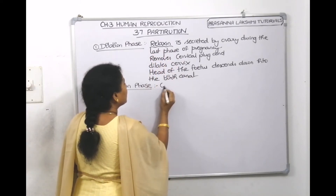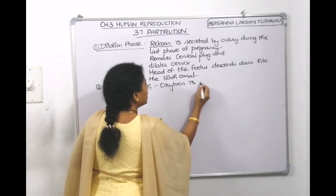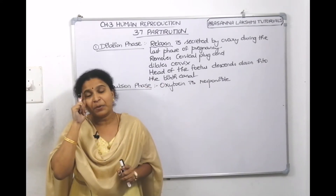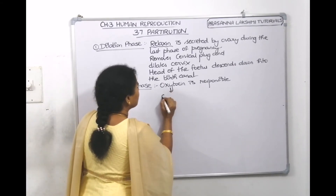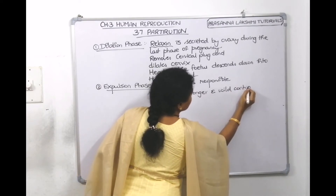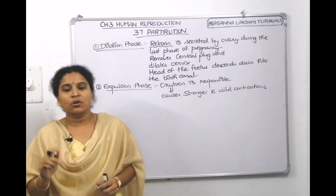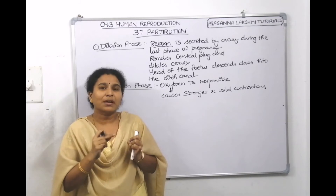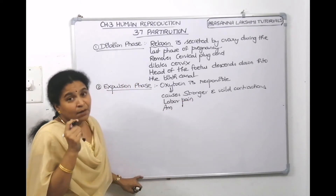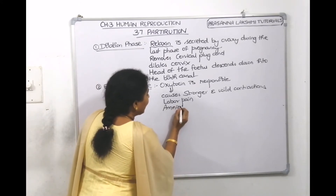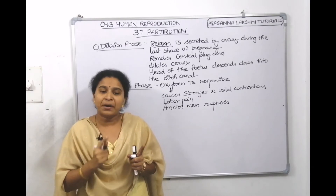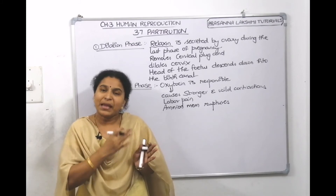The second phase is the expulsion phase, and oxytocin is responsible for it. Oxytocin, released by the maternal pituitary, makes uterine contractions stronger and wilder. These contractions induce labor pain, which leads to rupture of the amniotic membrane. When the amniotic membrane ruptures, amniotic fluid leaks out, and along with the amniotic fluid, the baby is expelled out.